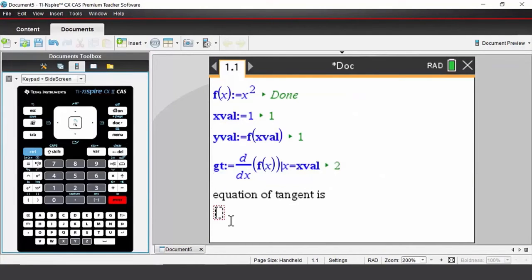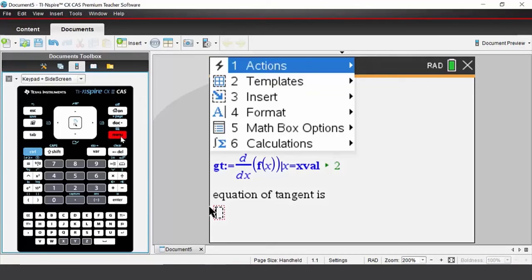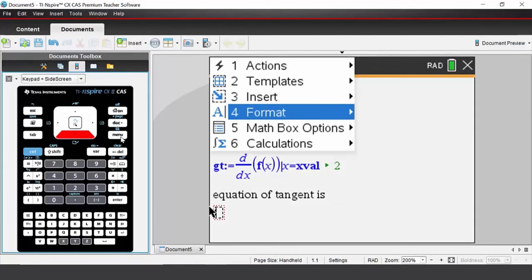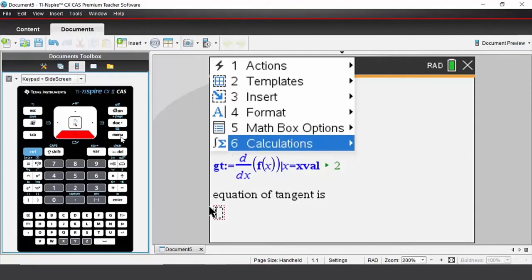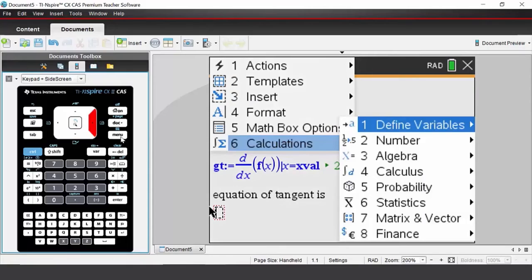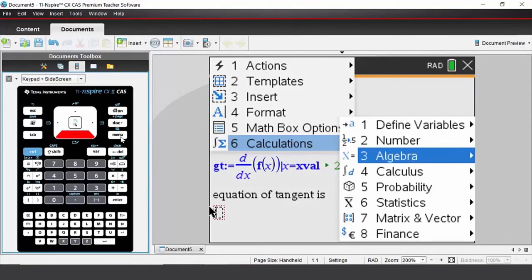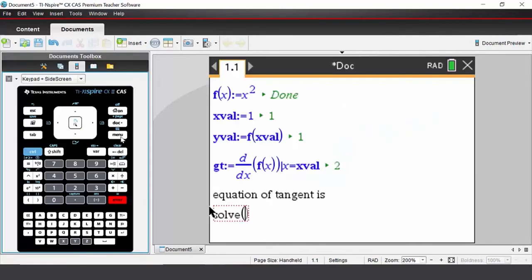We're now going to solve an equation. To access the solve feature, let's go to menu, come down to calculations option 6. This is an algebra skill, so let's look at option 3, algebra. We're going to choose option 1, which is solve.